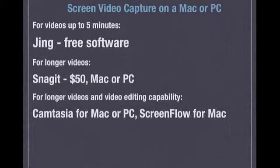And then finally, there's screen video capture. So if you want to do a demonstration — just like I'm doing right now, clicking through and making a recording of my computer screen — this is done with software like Jing, for instance, and Jing is free. You just download it for PC or Mac. For up to five minutes, you can make a recording video and save it to your computer, then upload it to YouTube or whatever you want. For longer videos, you want to use a program called Snagit, which is like the parent version of Jing. It's made by the same company and it's $50, and you just record your screen for Mac or PC.